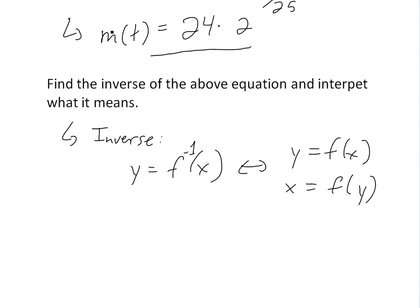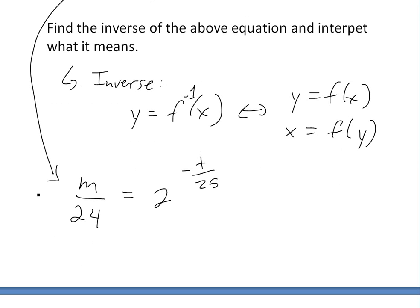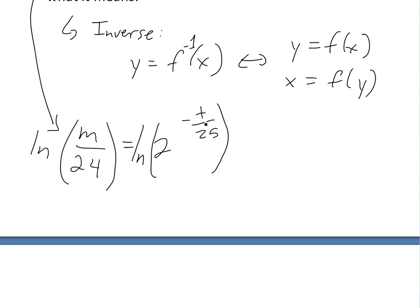We'll simplify this. Let's call this m now because it's going to be inside the function. So m divided by 24 equals 2^(-t/25). Now we can take the natural log of both sides - see the video link below for more on this procedure.